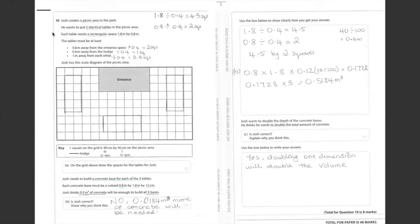Question 10. Here we need to put three identical tables in the picnic area. The rectangular space will be 1.8 meters by 0.8 meters. The key says one square on the grid is 40 centimeters by 40 centimeters. So we need to convert centimeters to meters to be the same unit as the rectangular space. So here 40 centimeters, if we divide by 100, it gives us 0.4 meters by 0.4 meters.